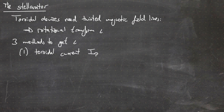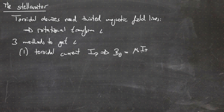The first method is a toroidal current, as in a tokamak, where the toroidal current I_p then produces a poloidal magnetic field, which can be calculated as mu-naught times the plasma current over two pi. If you add the minor radius two pi a in addition to the poloidal magnetic field, you add the toroidal magnetic field from the strong field coils, and together these make the twisted magnetic field line.